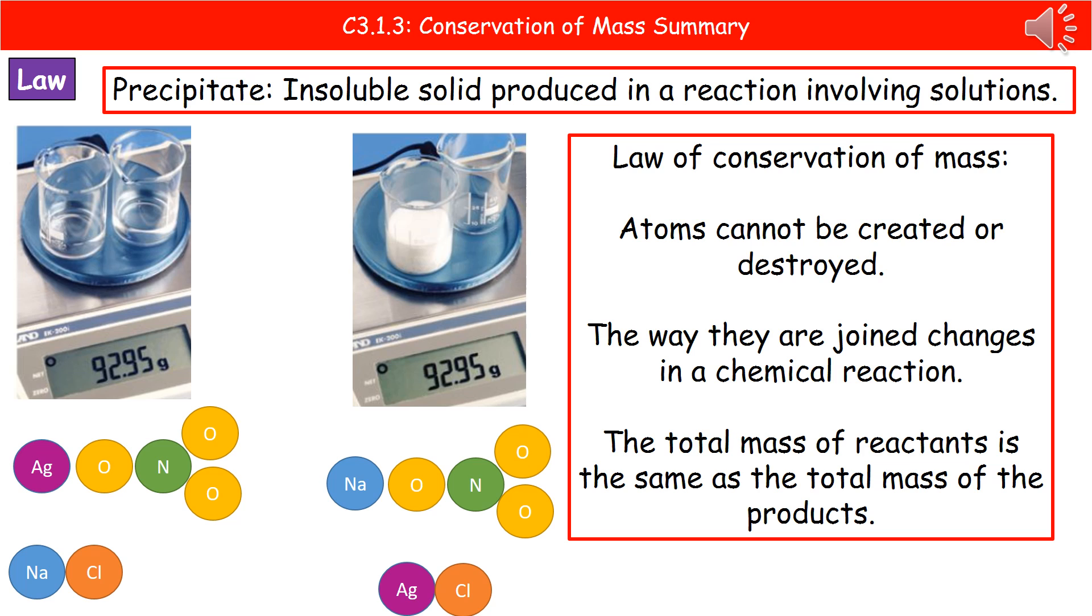Now, the reason for that is, as we've said, we can't create or destroy atoms. If you look at the little diagrams at the bottom with the actual atoms shown on the left hand side, you can see we've got one silver, three oxygens, one nitrogen, one sodium and one chlorine atom.